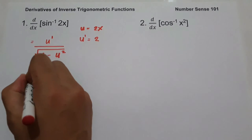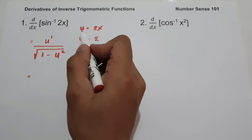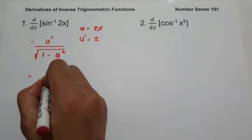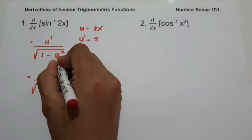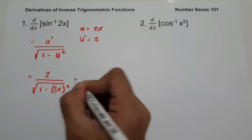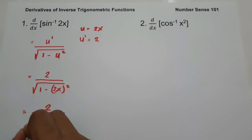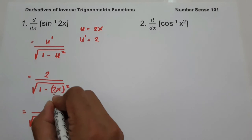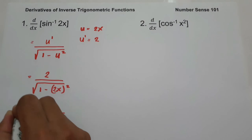So therefore, to find the derivative of arcsin 2x, all we have to do is substitute the value of u and u prime. So u prime is 2 over the square root of 1 minus u, that is 2x, and then squared. To simplify, we have 2 over the square root of 1 minus 4x squared, and this will be our answer.